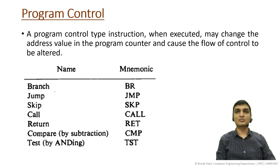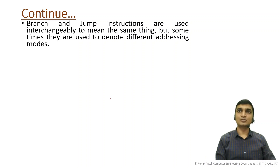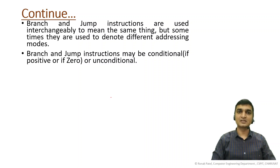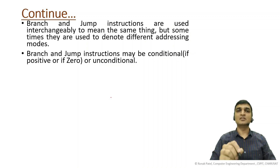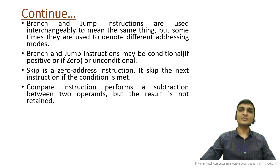Branch and jump are mostly similar, but the difference is the addressing mode used. Branch and jump instructions may be conditional — for example, branch if positive or if zero — or unconditional. Conditional branch means based on some condition it will alter your flow. Unconditional means it will not check any value; once the instruction is encountered it will move to the specified instruction. Skip is a zero-address instruction — it skips the next instruction if the condition is met.